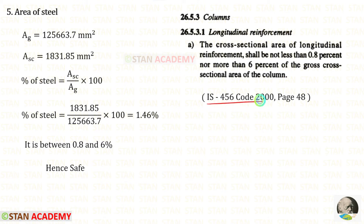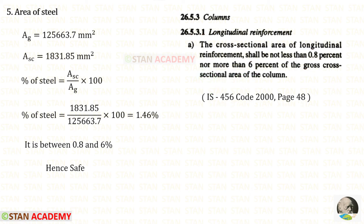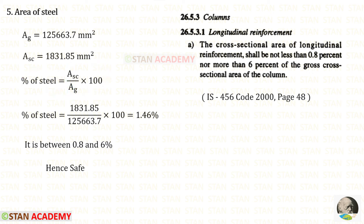Opening the code book page 48: the cross-sectional area of longitudinal reinforcement shall not be less than 0.8% and not more than 6% of the gross cross-sectional area. The percentage of steel = (Asc / Ag) × 100 = (1831.85 / 125663.7) × 100 = 1.46%. Since 1.46% is between 0.8% and 6%, it is safe.